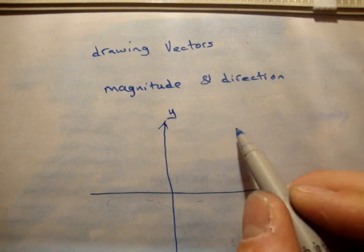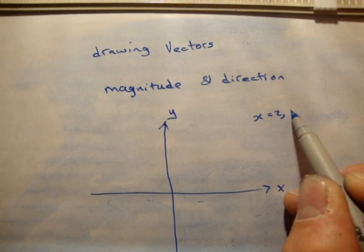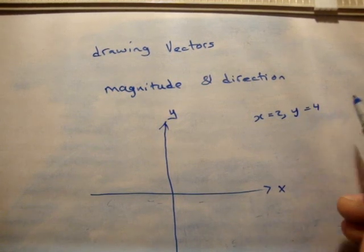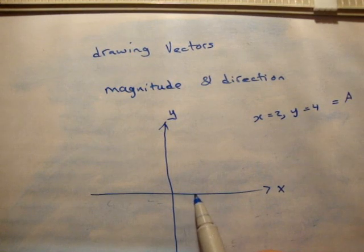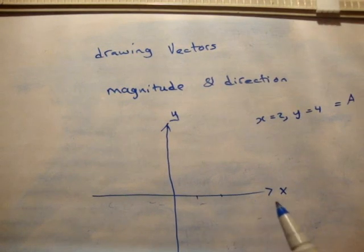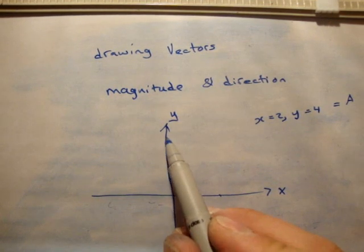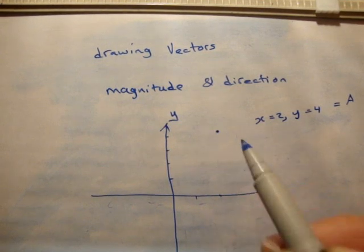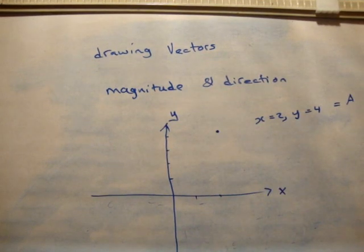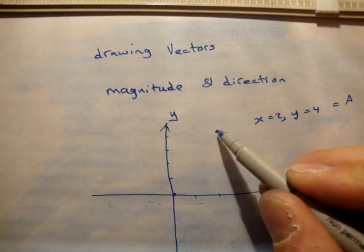So remember in maths you'd be given a point. You might be given the point x equals 2, y equals 4. And you might call that point A. You would say, well I'll call this 1 unit, this 2 units, I'm going to call this 1 unit, this 2 units, 3 units, 4 units, and you'd go 2x, 4y, and you'd draw a point. So the vector is the line joining the origin to that point.